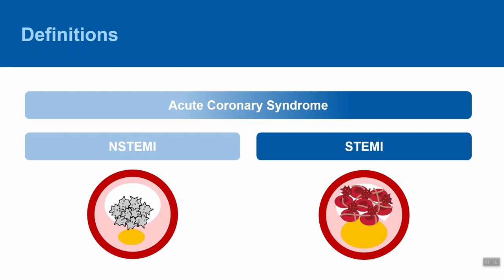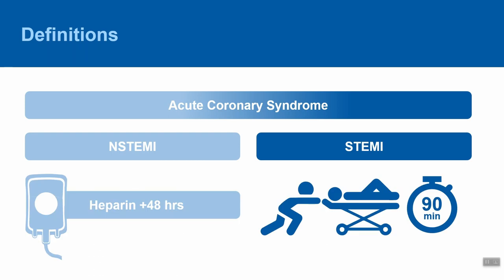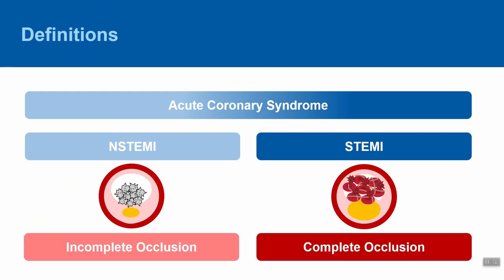This dichotomy is important because it shapes the way we think about patient management. For STEMIs, we feel a great sense of urgency to expedite these patients to the cath lab, ideally to facilitate a door-to-balloon time of less than 90 minutes. For NSTEMIs, the guidelines remind us that in most circumstances, patients can be safely managed on a heparin drip for 24 to 48 hours prior to cardiac catheterization. In this paradigm, STEMIs reflect complete coronary artery occlusion, while NSTEMIs reflect incomplete occlusion.